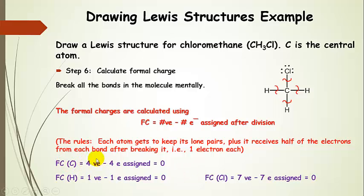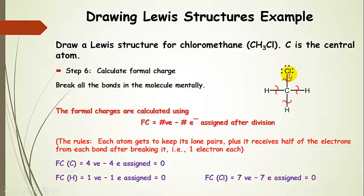Formal charge for carbon: four valence electrons from the periodic table, minus four assigned — four minus four is zero, so the formal charge for carbon is zero. Formal charge for hydrogen: one valence electron, subtract off the one electron assigned, giving a formal charge of zero. For chlorine, seven valence electrons — it's a halogen — subtract off the seven it gets in this division (three lone pairs plus one from the bond), so that also comes out to be zero. That means our Lewis structure is basically finished — we don't have to add formal charges because they are all zero, though we do have to show that we calculated it.